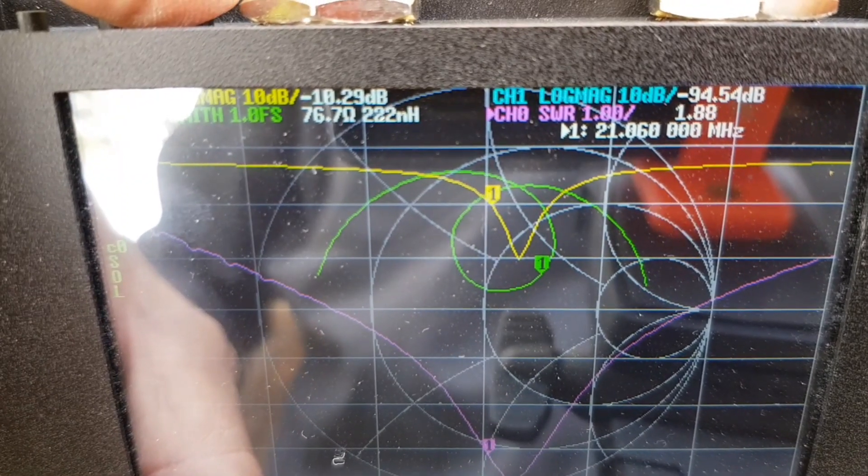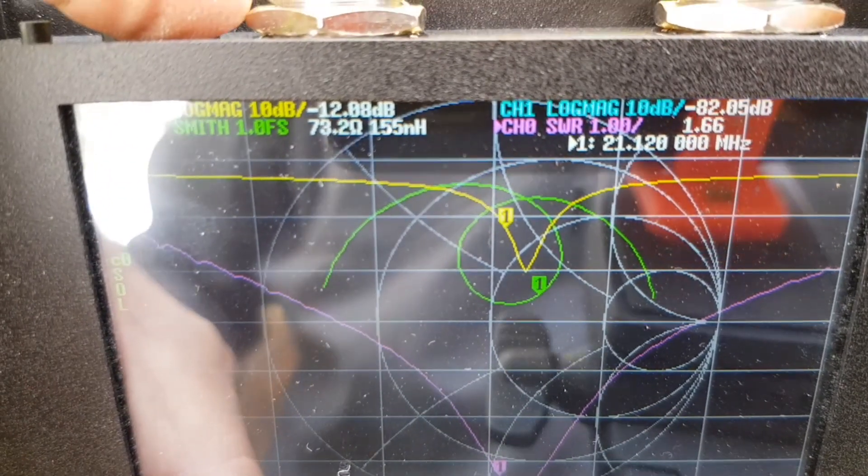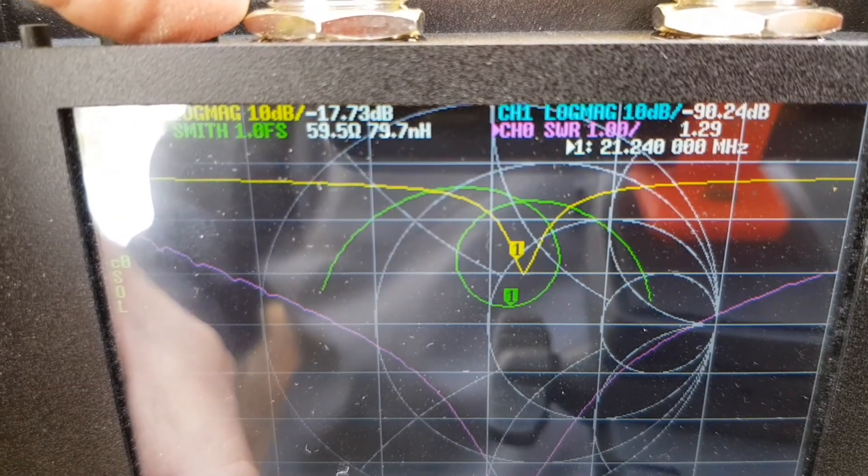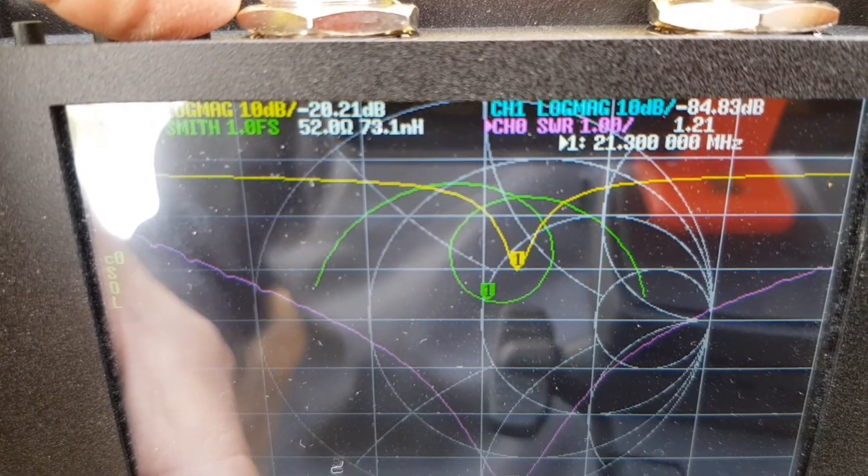And now, with 1.1 microhenry inductors in at the link point, the SWR at 21.3 is down to 1.2 to 1.